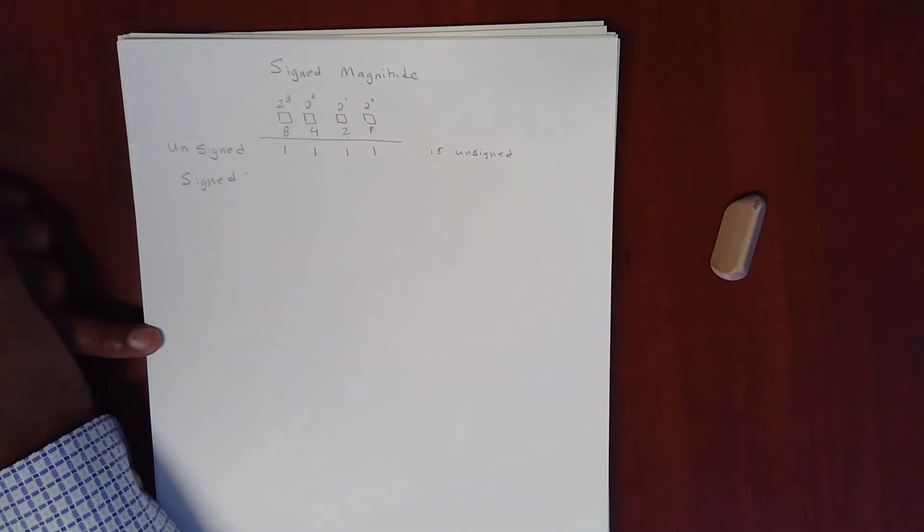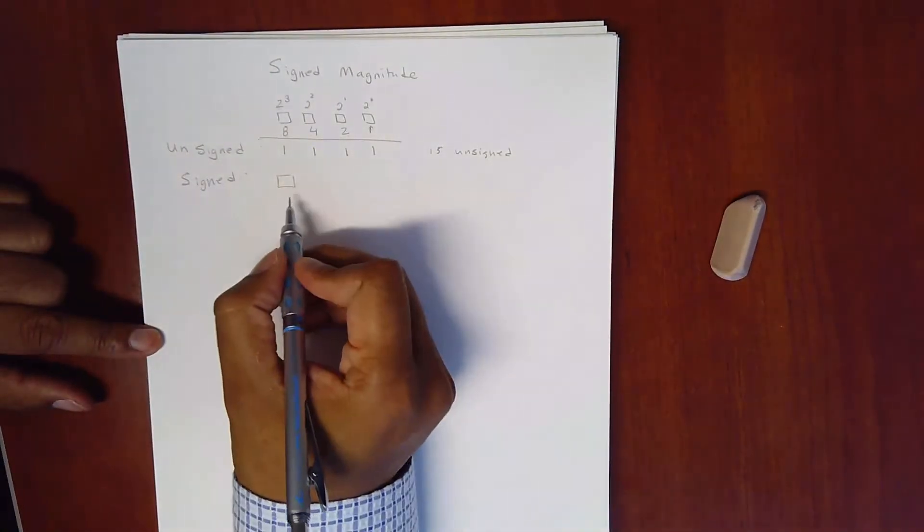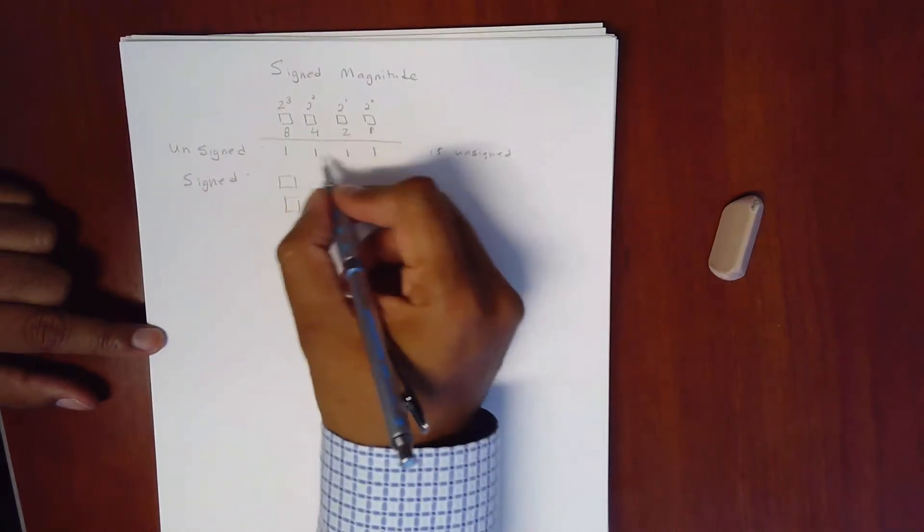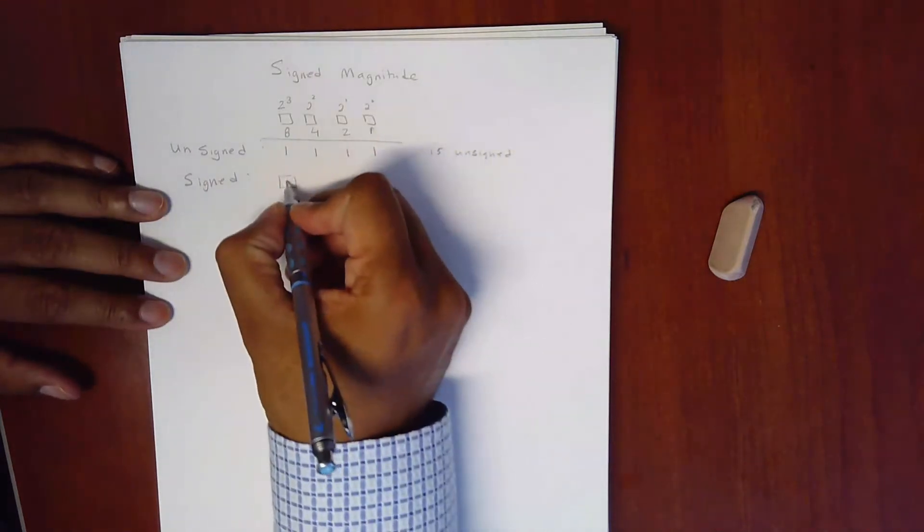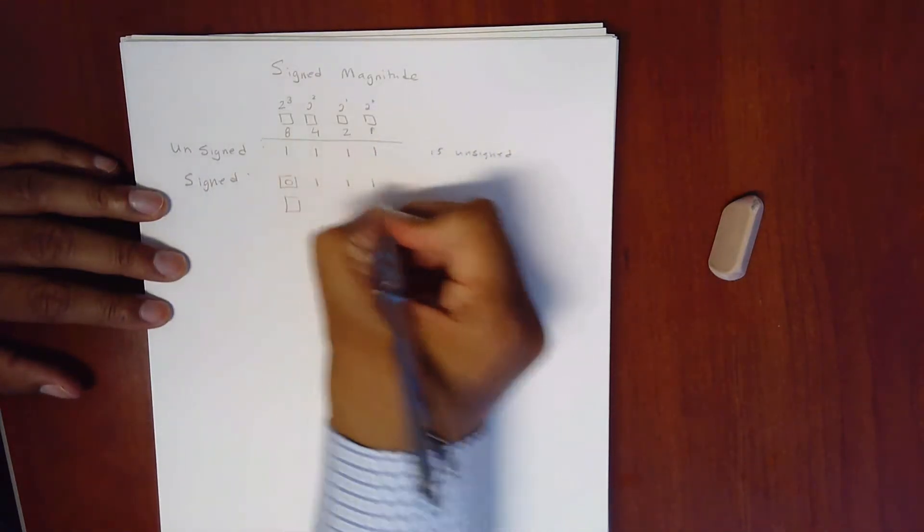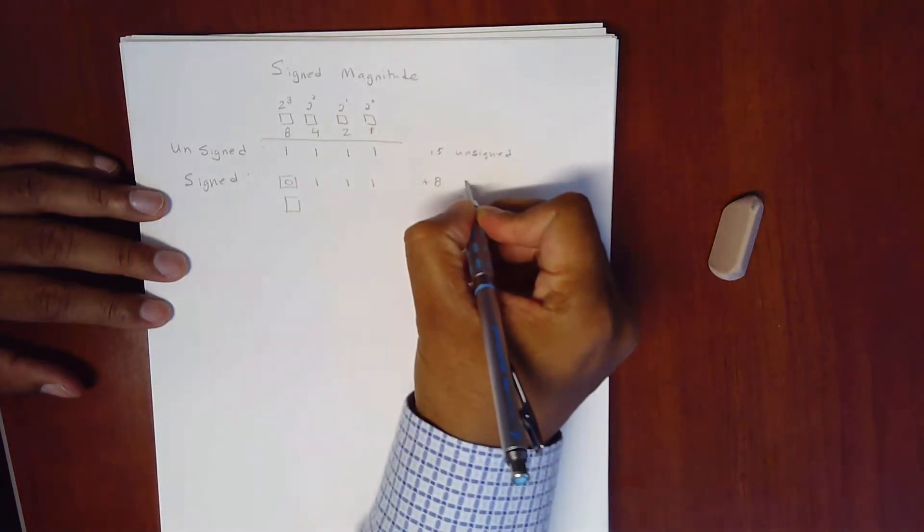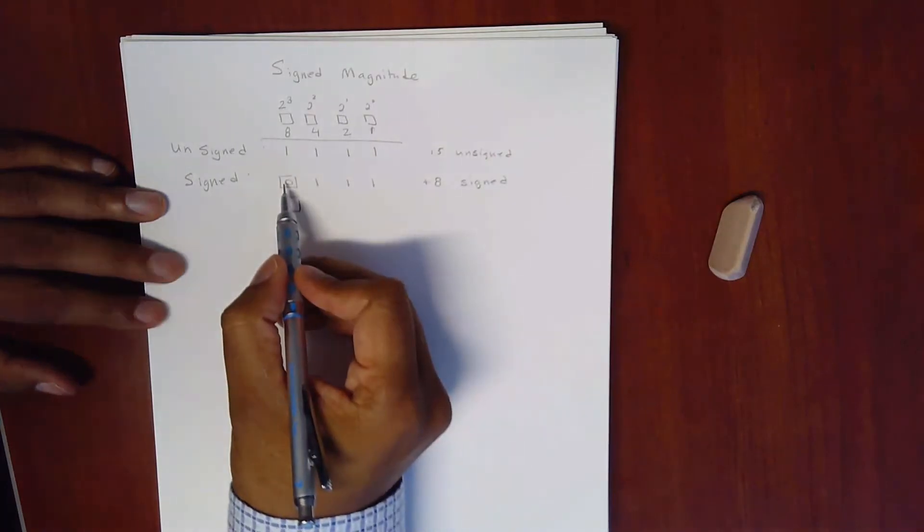However, if this is going to be signed, then this becomes a placeholder and doesn't count. So when I say 1, 1, 1, 1 signed, now I can say 0, 1, 1, 1 is now 8. Positive 8 signed, where the 0 now is in the fourth bit.